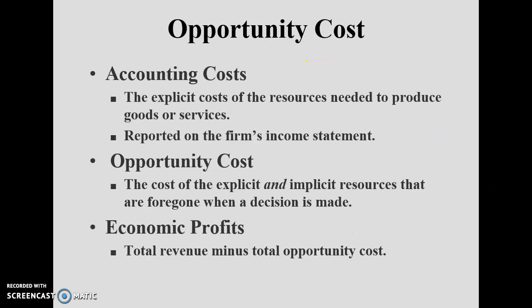What do we mean by opportunity cost? Accounting cost refers to the explicit costs used to produce goods and services — for example, wages and salaries of workers, cost of raw materials, and transportation costs — and it is always reported on the firm's income statement. Opportunity cost is the cost of both explicit and implicit resources that are foregone by making a decision. Accounting profit deducts only explicit costs, while economic profit deducts both explicit and implicit costs — making economic profit always less than accounting profit.